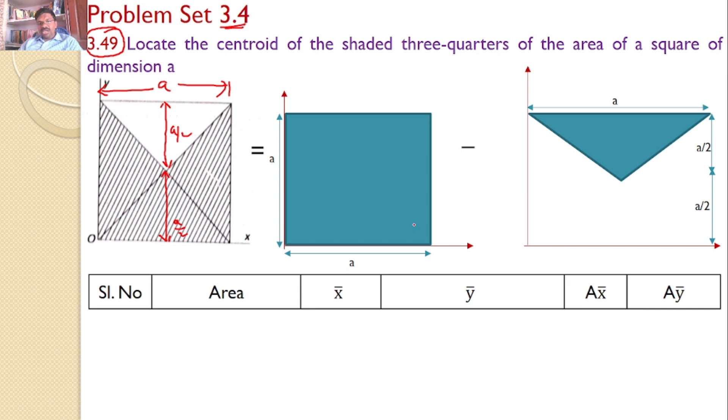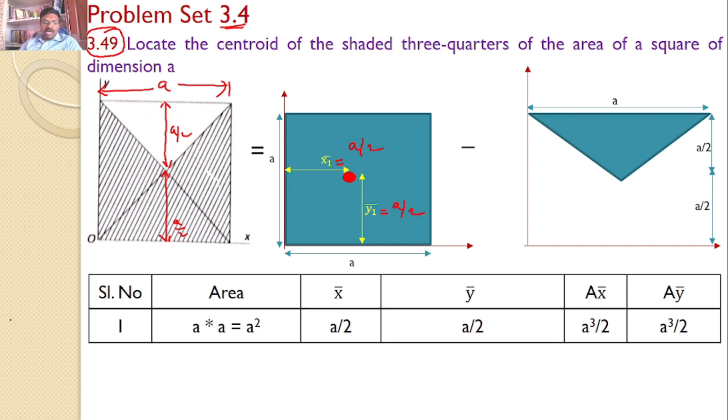Now you will form a table. First, you will take the centroid for area 1. It is a square. Centroid is exactly at the center. So this is my y1 bar, and this is x1 bar. Clearly, we can say x1 bar is equal to a by 2, and y1 bar is equal to a by 2. So I can fill the table now. A into a is a squared. x bar is equal to a by 2, y bar is equal to a by 2.